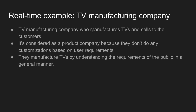Let's take another real-time example — a TV manufacturing company. We select a Sony TV or an LG TV. The TV company manufactures TVs with features like smart TV, USB and HDMI support. It is considered a product company because they don't do any customizations based on individual user requirements.